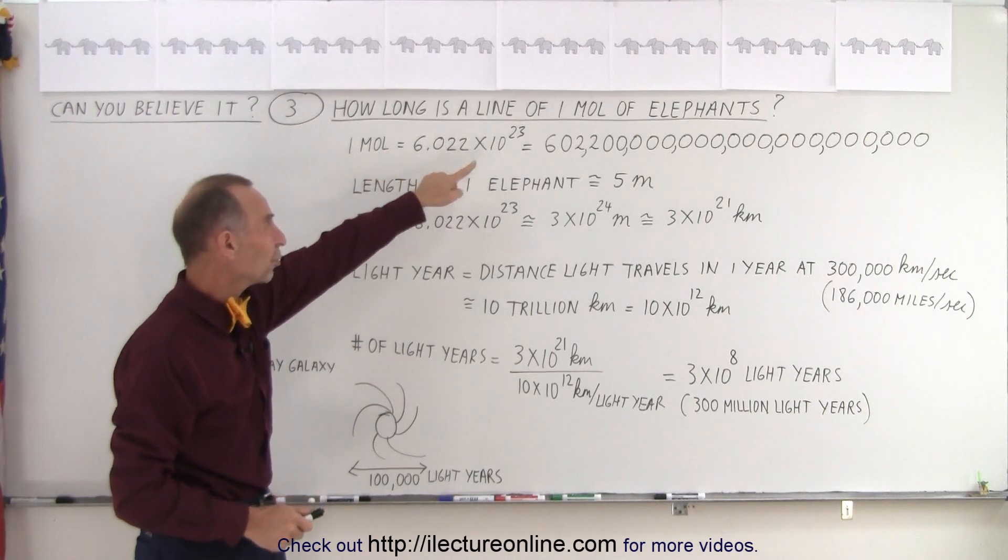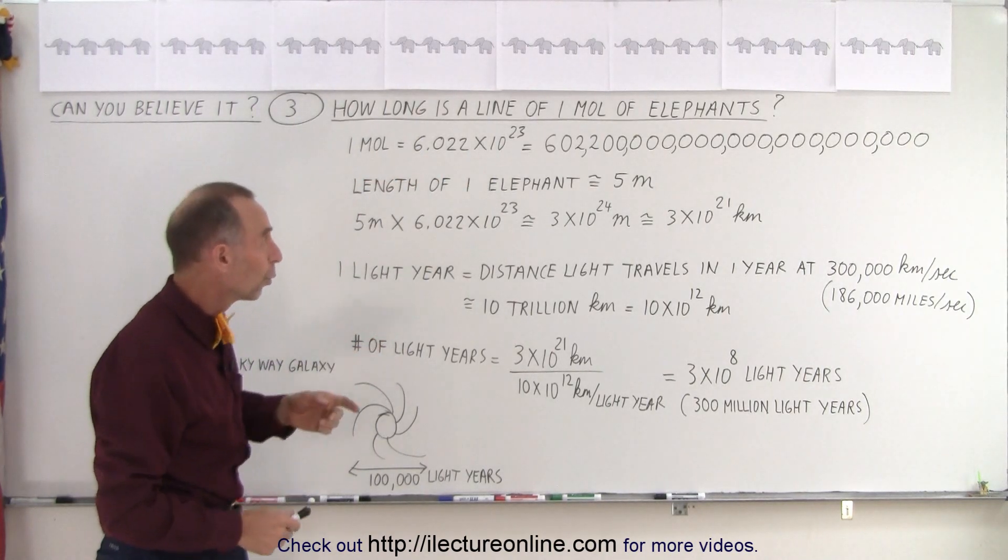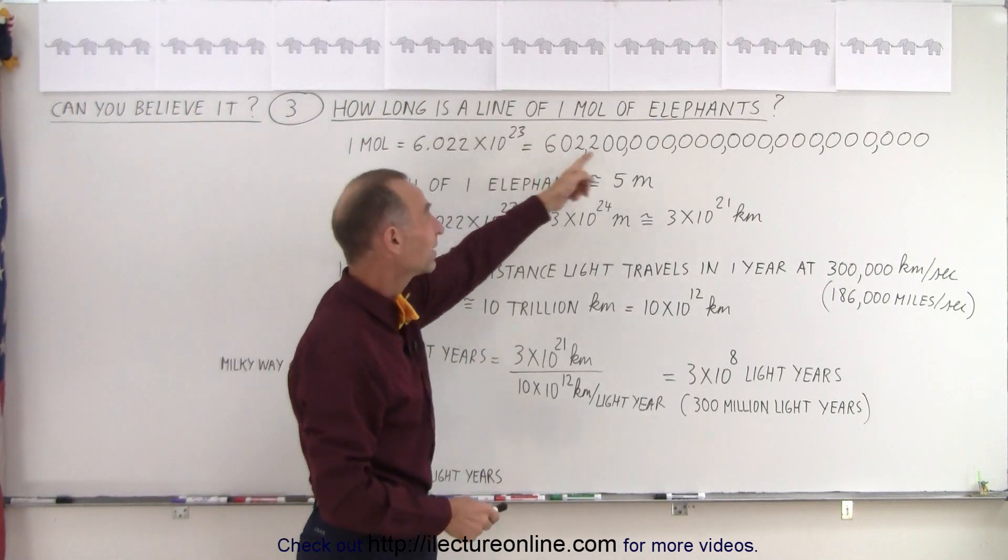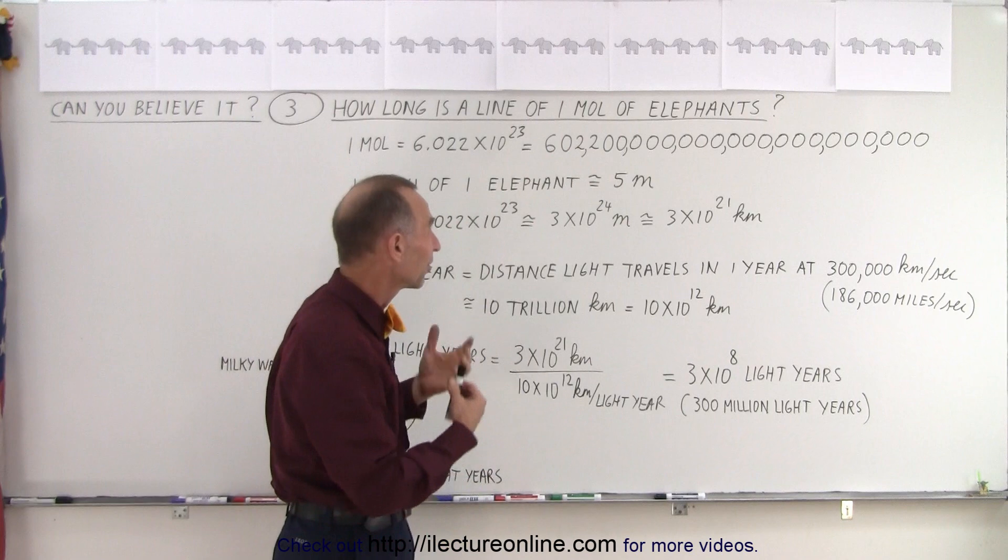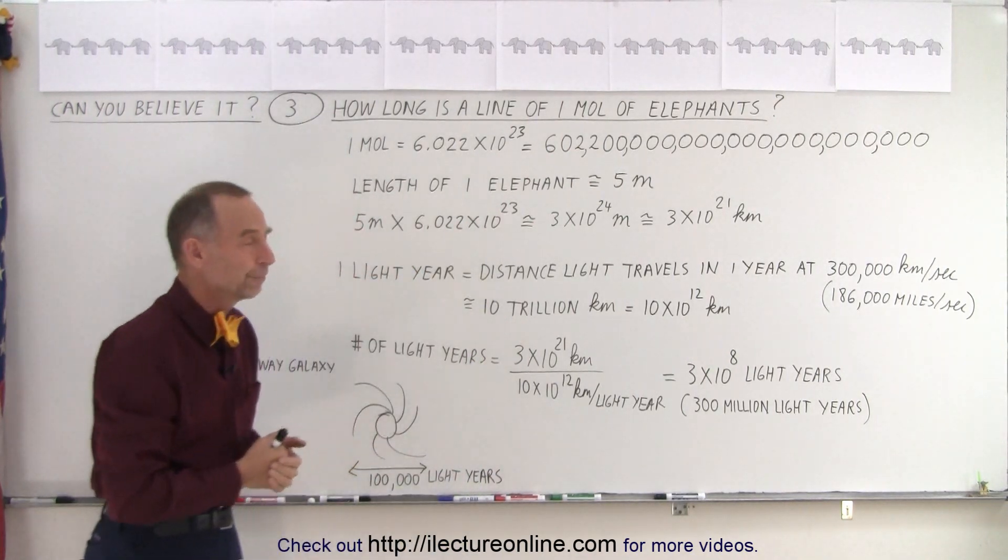Now, remember, a mole is 6 times 10 to the 23rd or a 6 with 23 zeros. It's a little bit more than 6, but essentially, it's 6 times 10 to the 23rd.